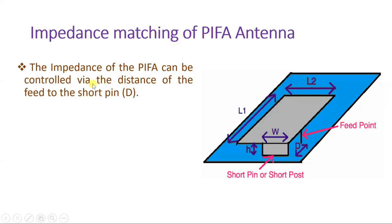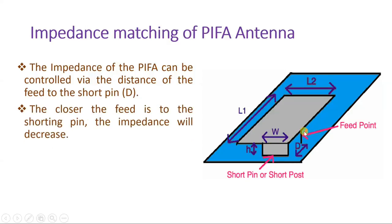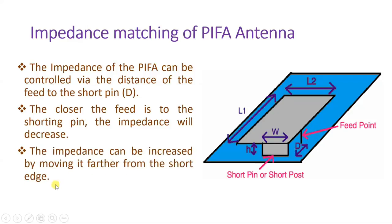The impedance of PIFA can be controlled via distance d. By changing this distance d we can change impedance. As you place the feed point closer to the shorting pin, impedance will decrease. In short: smaller the d, smaller the impedance; if you increase d, impedance will increase. Based on transmission line impedance — sometimes 75 ohm or 50 ohm — we change d accordingly. For 50 ohm, the feed point is placed closer, and for 75 ohm, it is placed a bit farther.